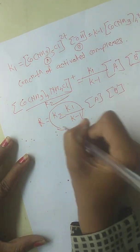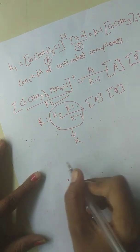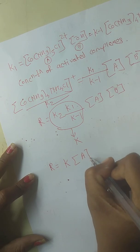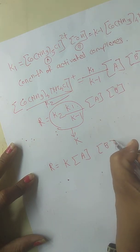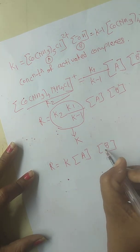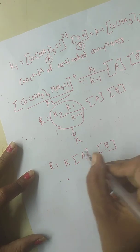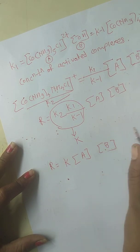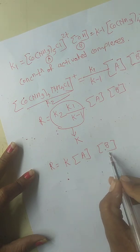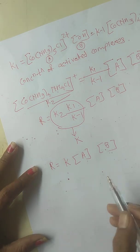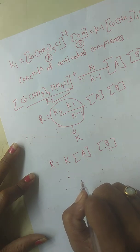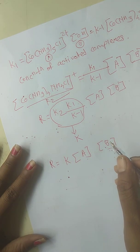This whole term is considered as K, and we write the equation again: R equals K times concentration of A and concentration of B. From our equation, the rate of reaction depends on the concentration of substrate A and the concentration of nucleophile B. Generally, when both species are involved in the rate of reaction, it is called a second-order reaction.